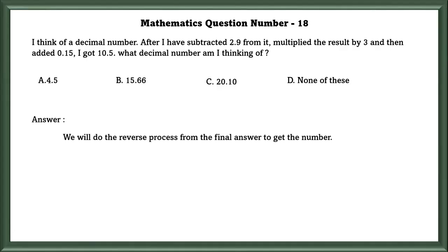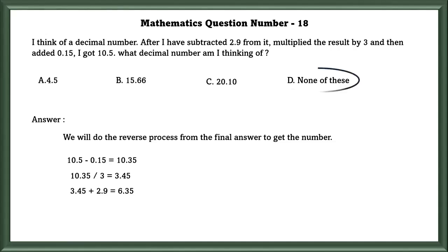In order to solve this, we have to reverse the process from the final answer. So, 10.5 minus 0.15 equals 10.35. Then 10.35 divided by 3 equals 3.45. Then 3.45 plus 2.9 equals 6.35. As there is no such option as 6.35, the answer is none of these.